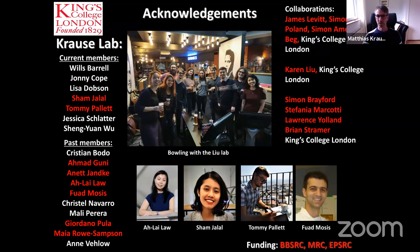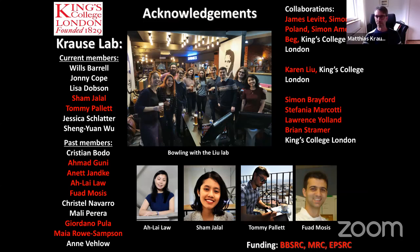I already acknowledged all the people who did the work while I was giving the talk. I just want to emphasize that this would not have been possible without excellent collaborations within King's College London: Simon Ameer-Beg's lab who helped with FRET-FLIM analysis, Brian Stramer's lab who helped with particle image velocimetry of actin retrograde flow, and Claudio Stern for a long-standing collaboration on neural crest migration in the mouse. Thank you for your attention.